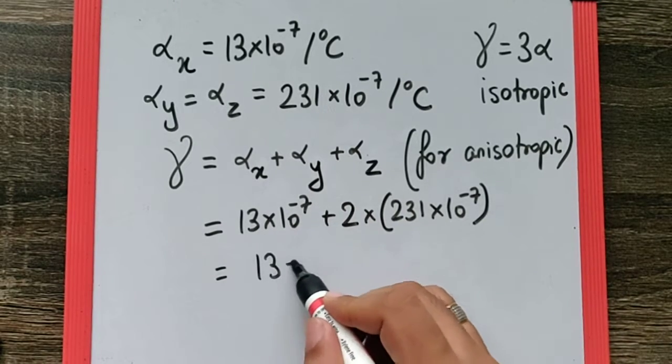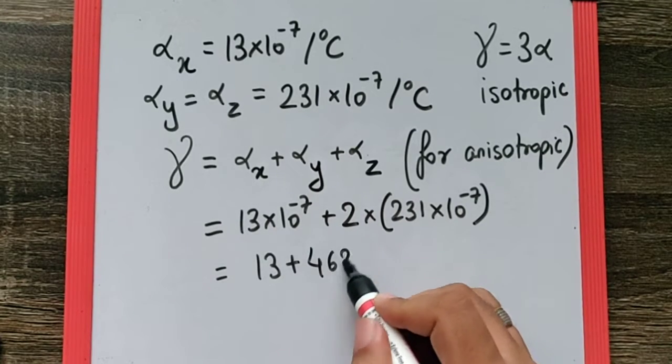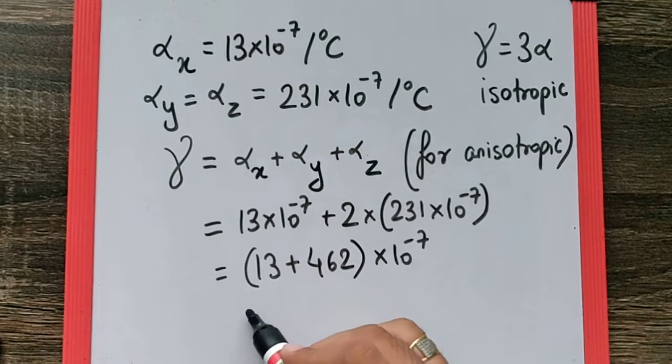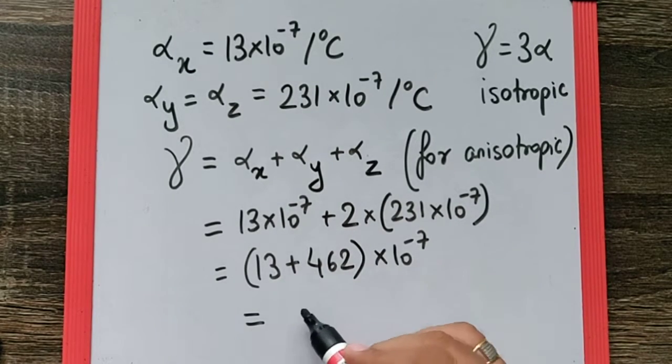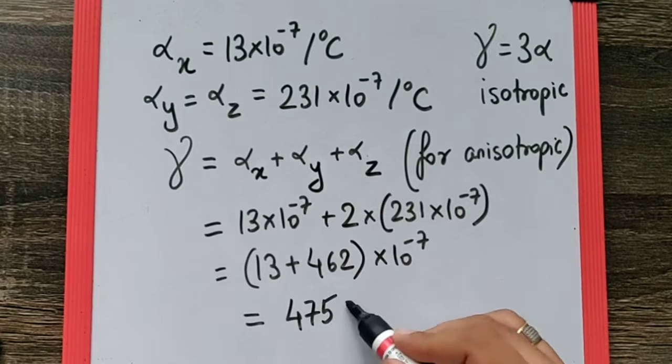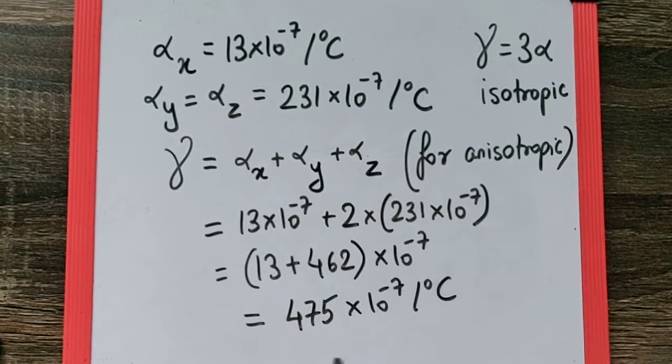We get it as 13 + 462, common 10⁻⁷, and so the final answer is 475×10⁻⁷ per degree Celsius.